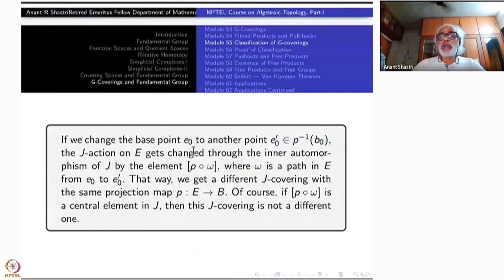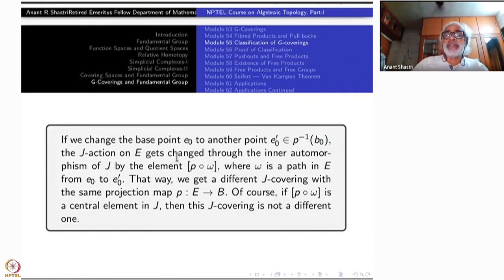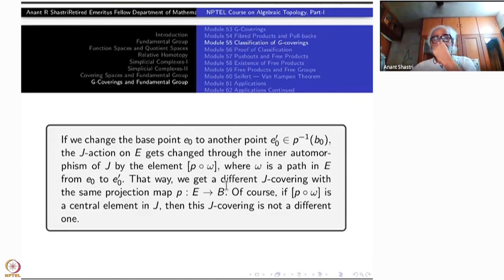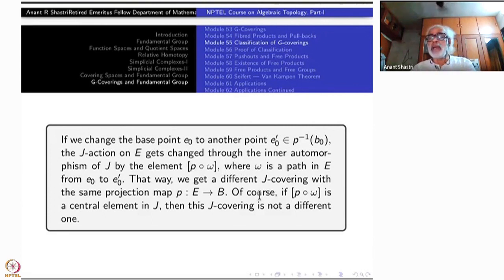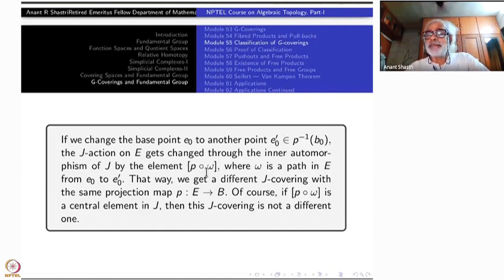If we change the base point E0 to some other point E0' belonging to the same fiber, then the J-action on E gets changed because this time you are lifting loops not at E0 but at E0'. The corresponding change is obtained by taking a path from E0 to E0' inside E. The entire action gets conjugated by the corresponding element, and inner conjugation is an automorphism, so the new action is obtained by an automorphic change.